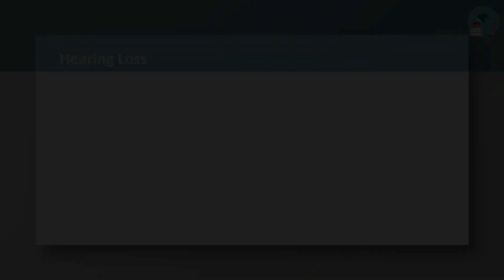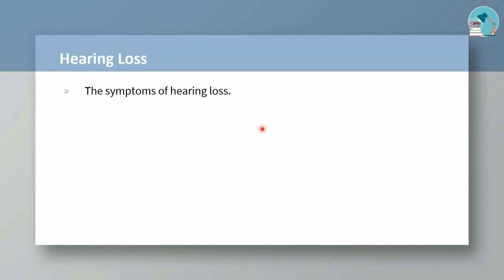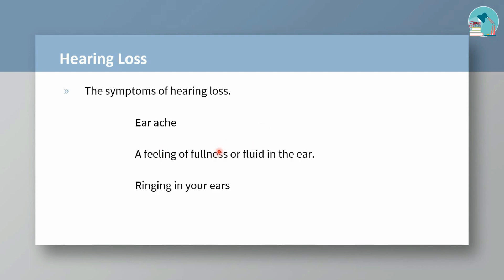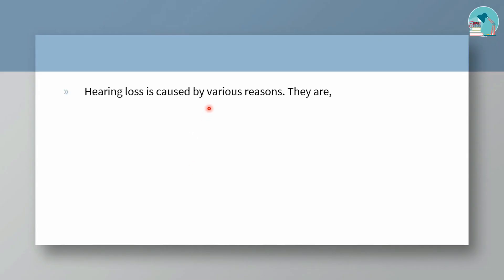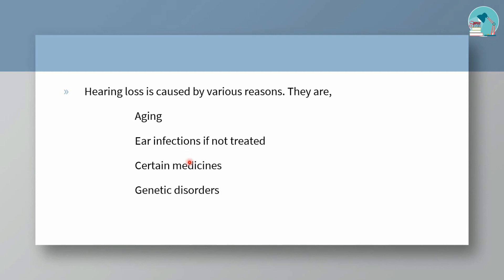Symptoms of hearing loss include ear ache, feeling of illness or fluid in the ear, ear ringing sound, and hearing loss. The causes include aging, ear infection, certain medicines, genetic disorders, severe blows to the head, and noise pollution.